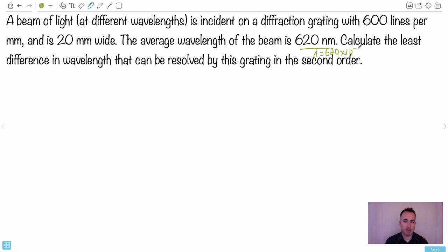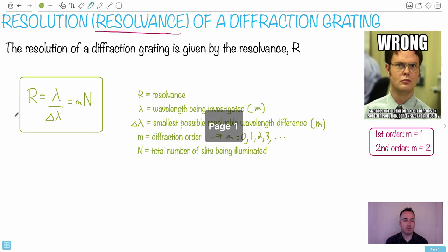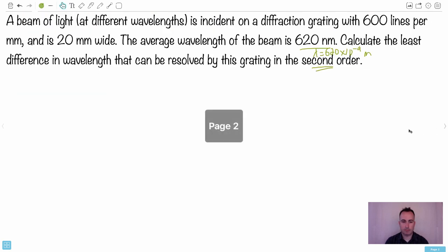By the way, that's times 10 to the minus 9, right? That's 620 times 10^-9 meters as I remember them. Calculate the least difference in wavelength that can be resolved by this in the second order. What does second order mean? Let's just go back actually. Let's just write down this equation. Or can I be clever and copy it?